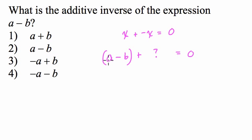Well, the opposite of a is negative a, and the opposite of negative b is positive b. So I can add these two now: a minus b plus negative a plus b, and I should get zero. Let's test that.